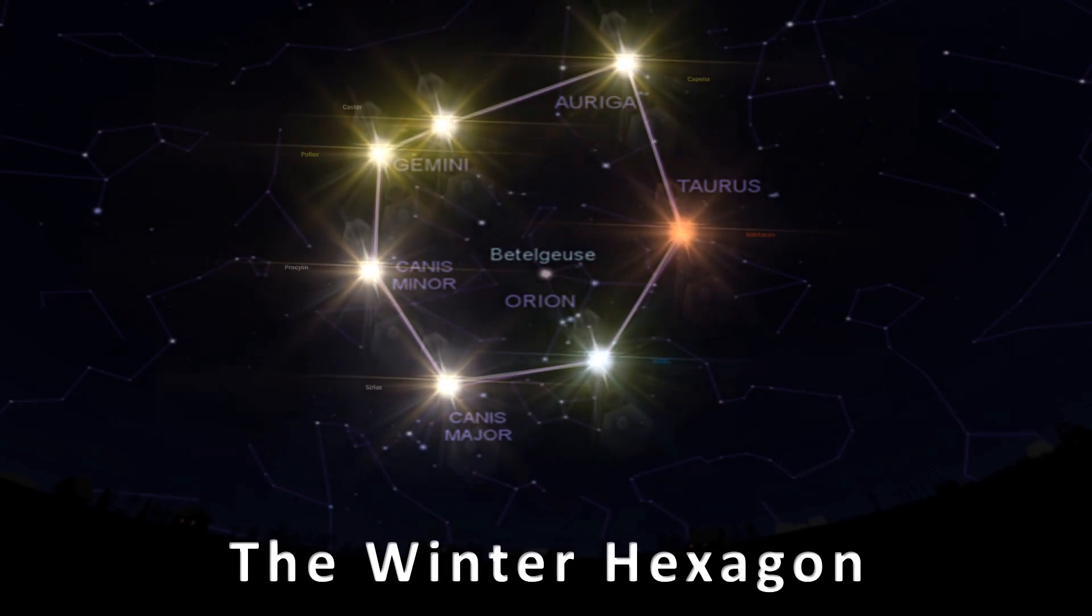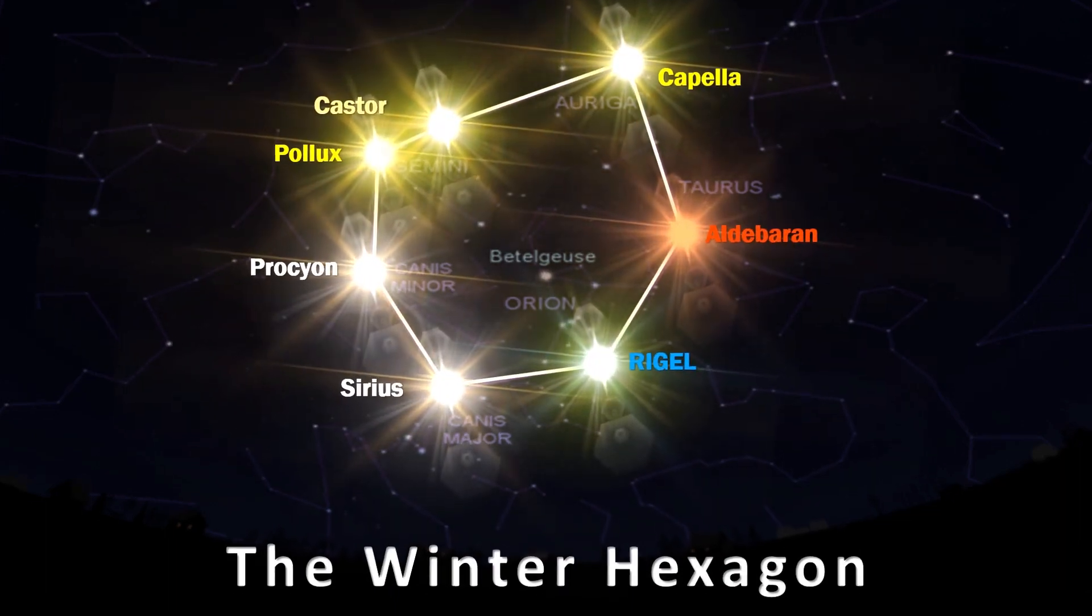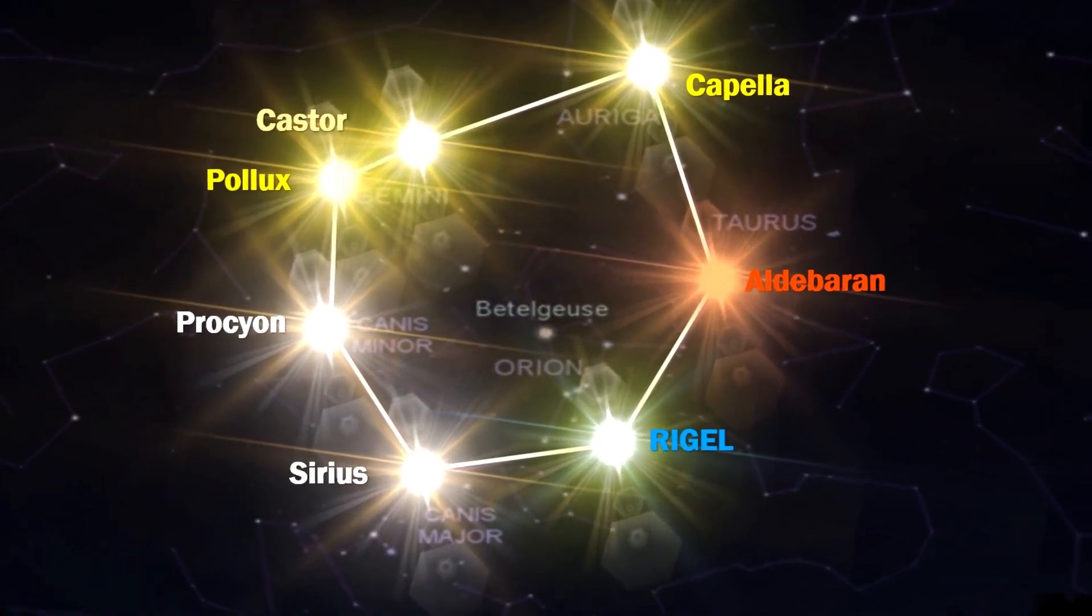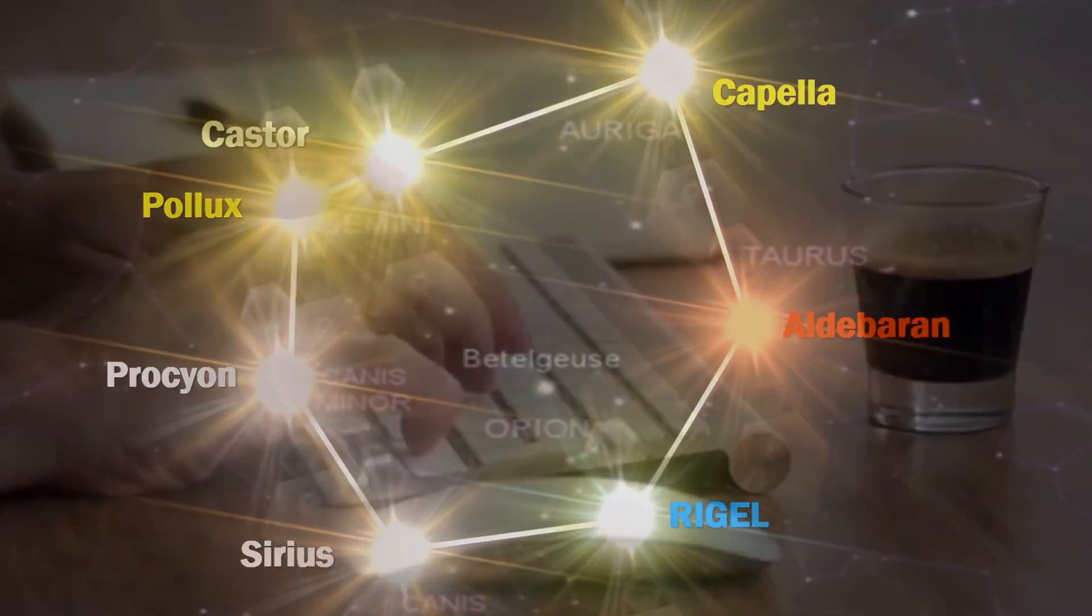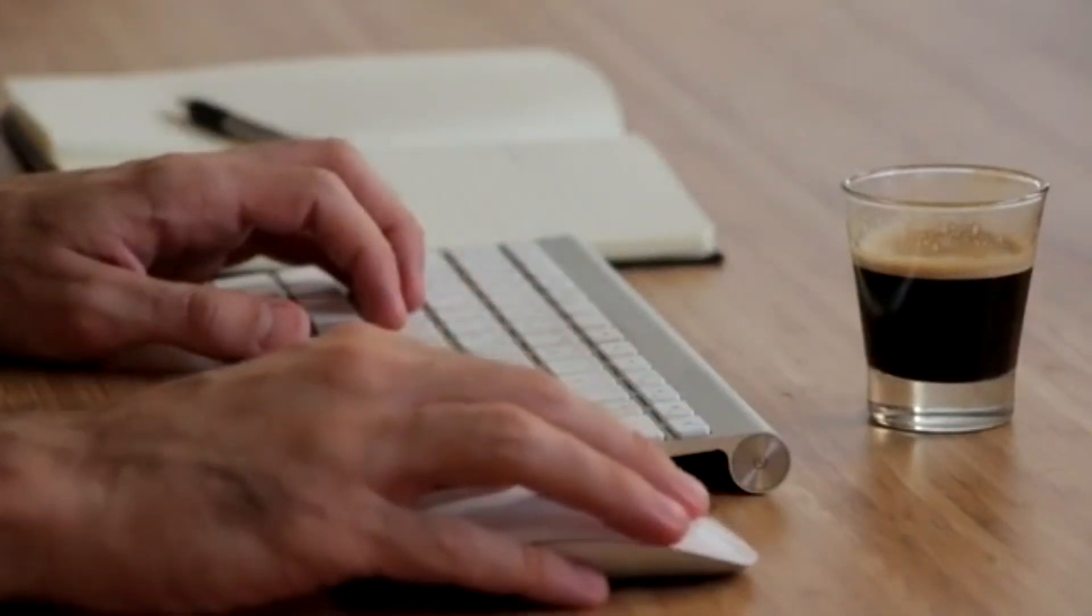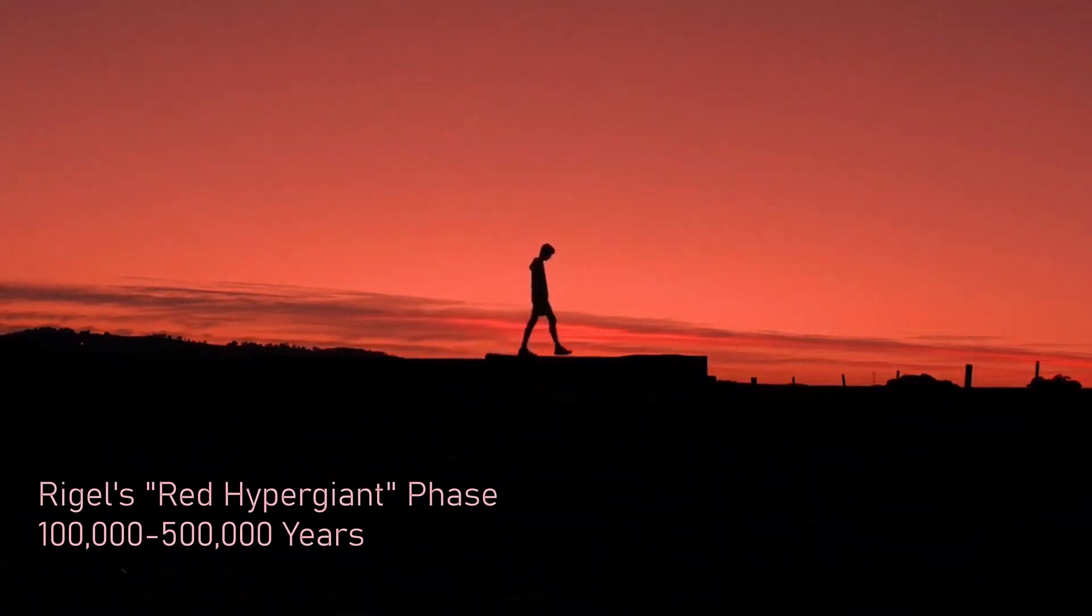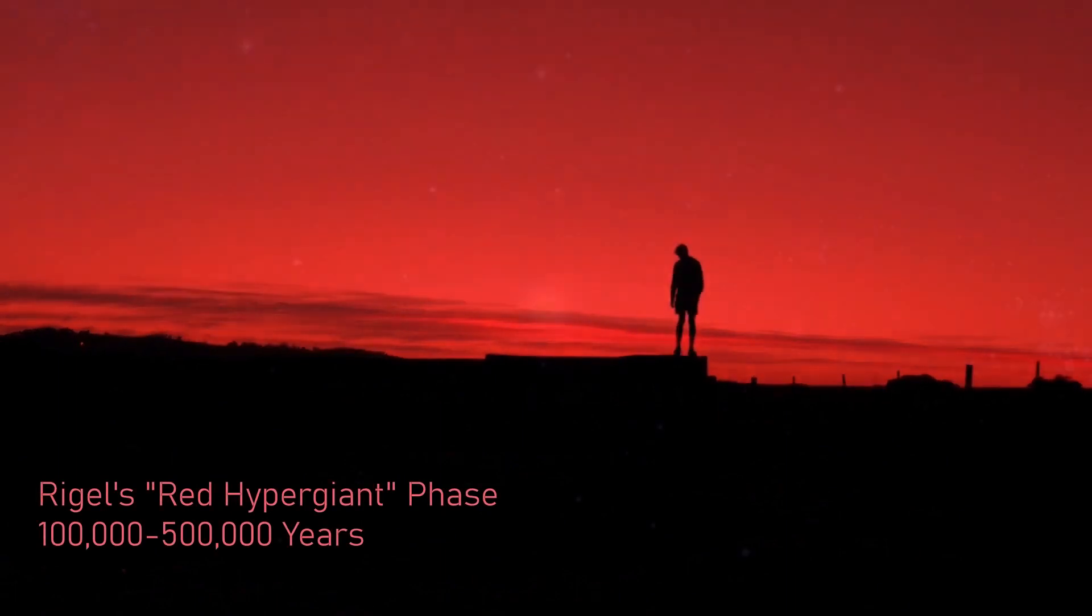Viewers of this channel will likely be aware that Rigel forms an integral part of the winter hexagon, a dazzling star pattern that captivates observers during the cold midwinter nights. So it seems likely that in the next few million years Rigel is projected to evolve into a red supergiant, initiating its path towards the final phases of its stellar journey. This red hypergiant phase is estimated to last between 100,000 and 500,000 years.